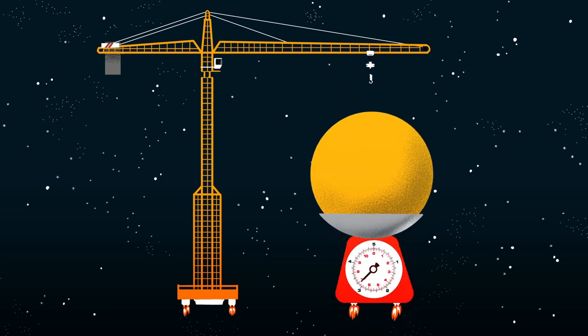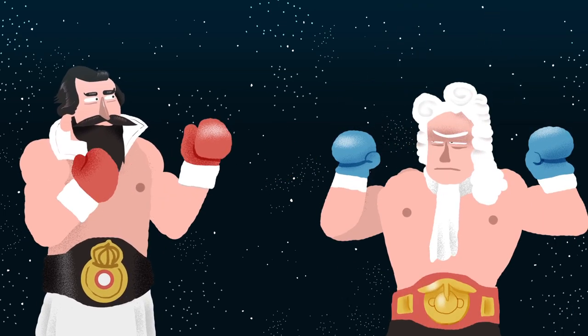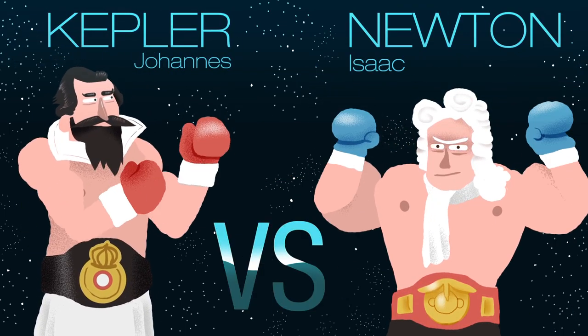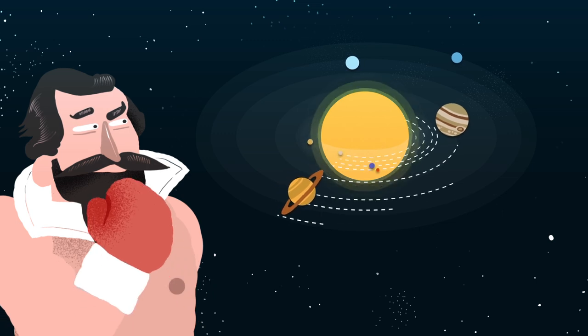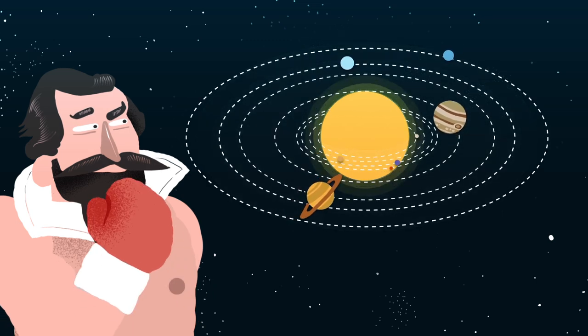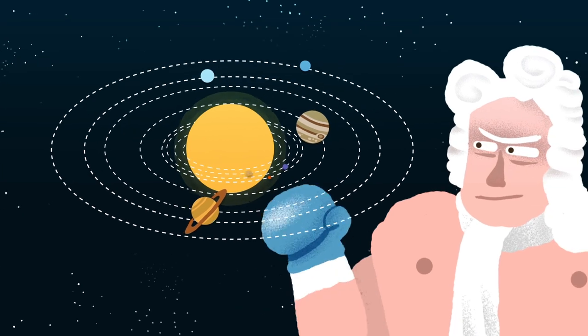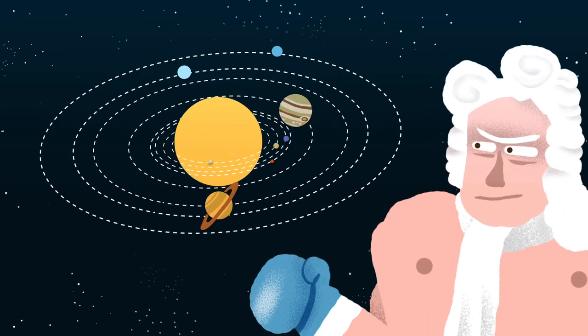Set aside those cosmic weighing scales, we need to bring in two astronomical heavyweights, Johannes Kepler and Isaac Newton. Kepler studied the motions of the planets and didn't quite understand why they stayed in orbit around the Sun, until Newton came along 80 years later and formulated gravity.